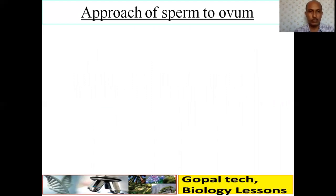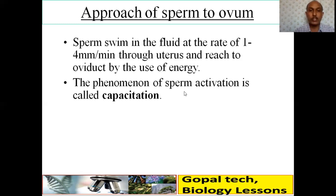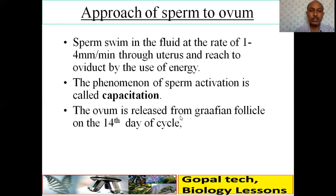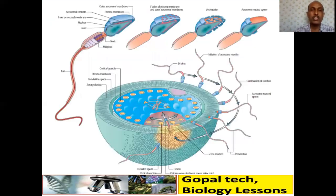Regarding the approach of sperm to ovum: the sperm swim through the fluid at a rate of 1 to 4 millimeters per minute through the uterus and reach the oviduct. During this journey, sperm activation occurs — a process called capacitation, in which the acrosomal cap becomes thin. The ovum is released from the Graafian follicle on the 14th day of the cycle. The ovum secretes a fertilizing chemical while the sperm release anti-fertilizing substances; these are species-specific and must match.